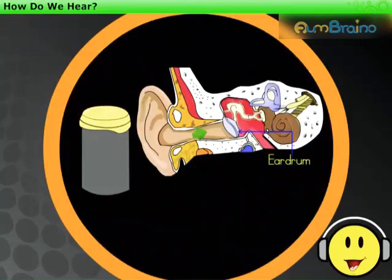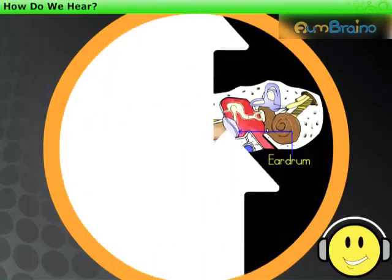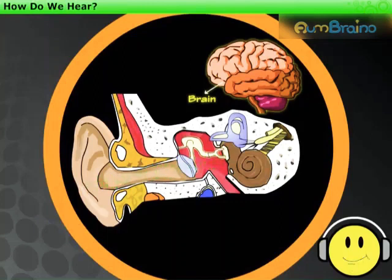The eardrum is also like a stretched rubber sheet, which vibrates due to sound. The eardrum sends the vibrations to the inner ear. From there, the signal goes to the brain. That is how we hear.